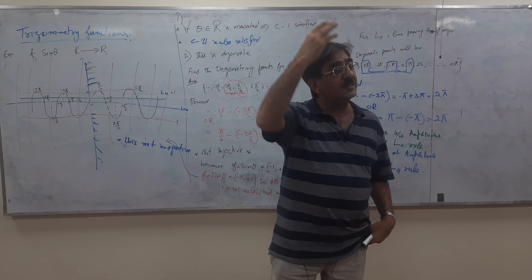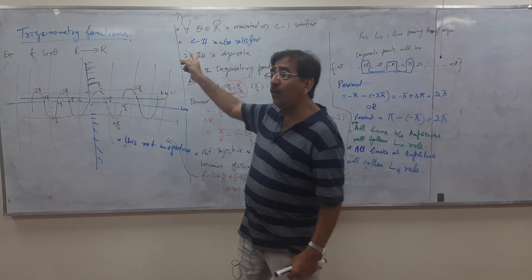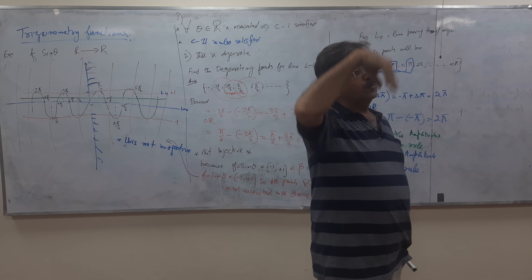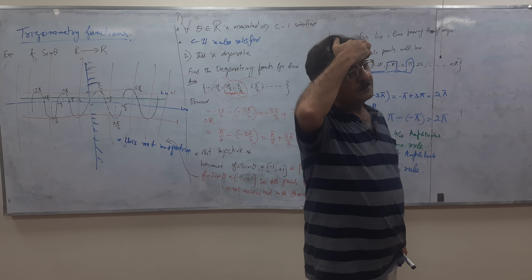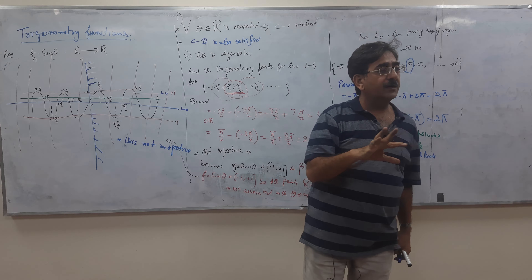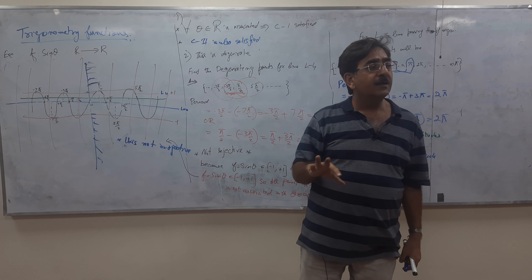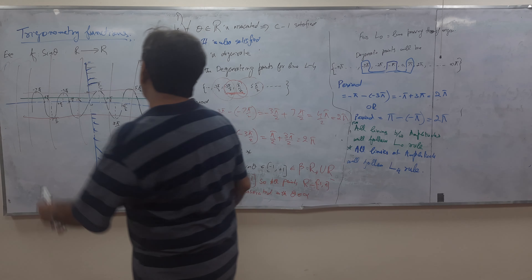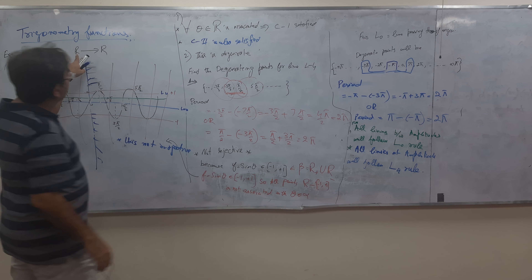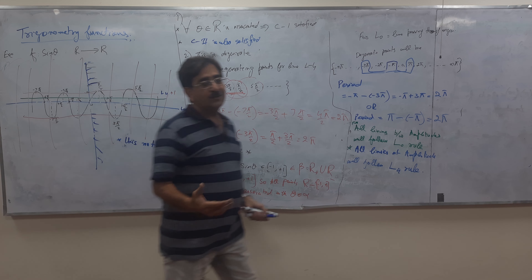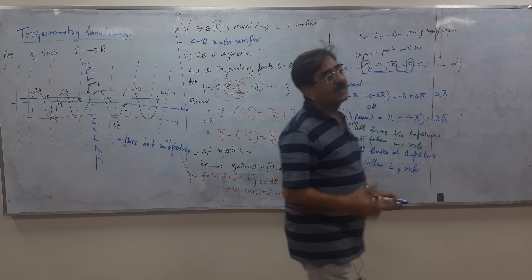Yes, because we have R to R, this means the codomain is infinity. But if we modify the range to be minus 1 to plus 1, then that will become surjective — like we had in a previous exercise.